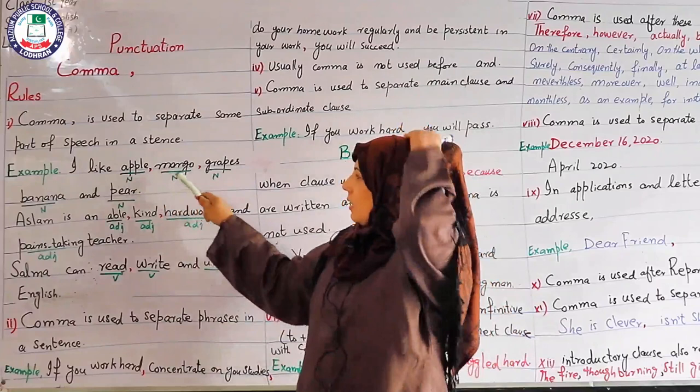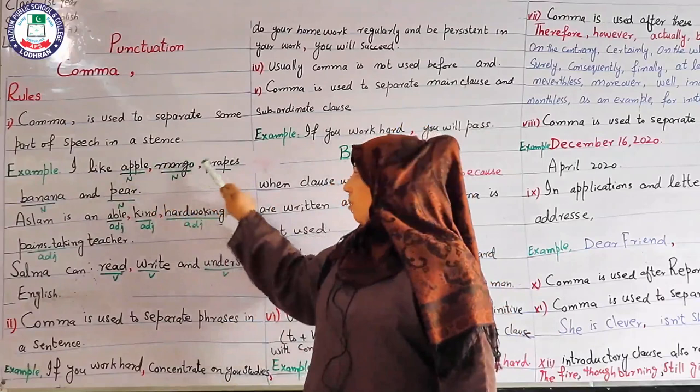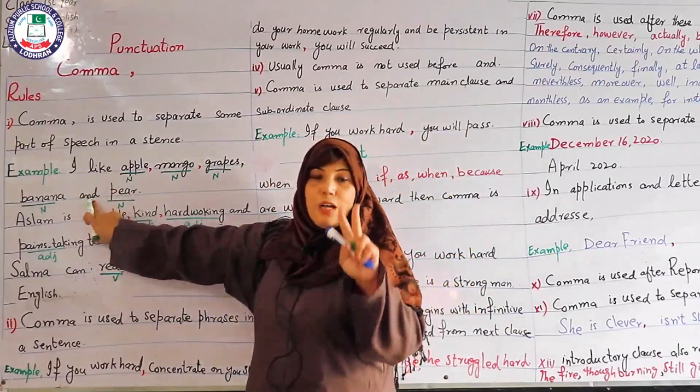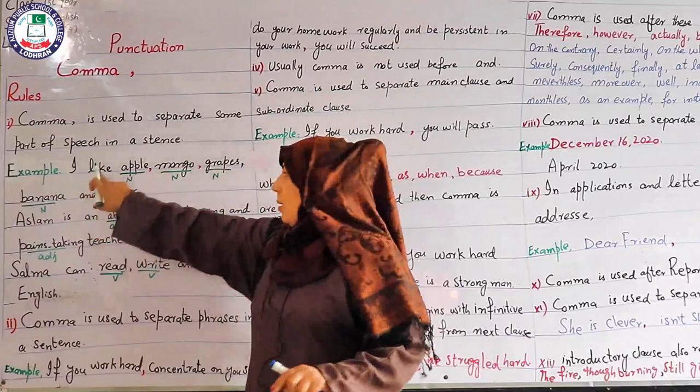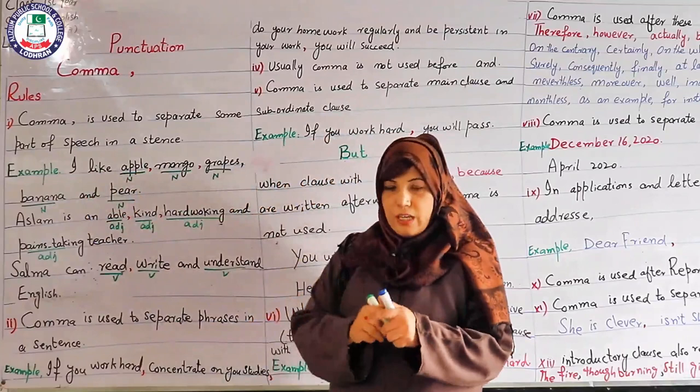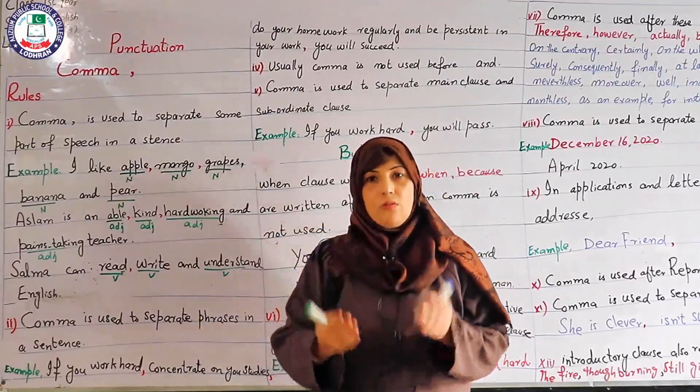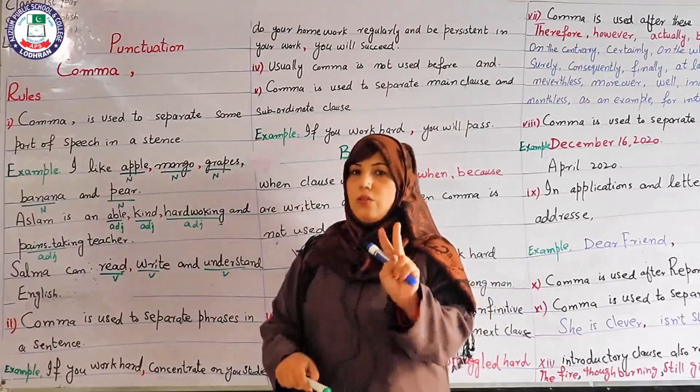I like apple, comma, mango, comma, grapes, comma, banana and pear. Note: we haven't put the comma between the last two nouns — 'banana and pear'. We use 'and' between the last two instead of a comma.